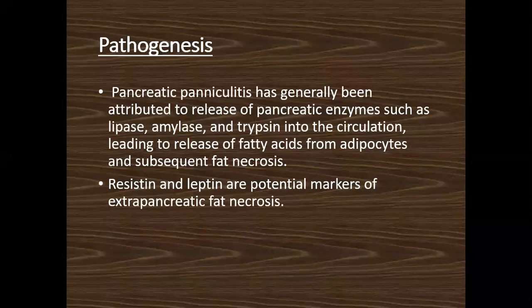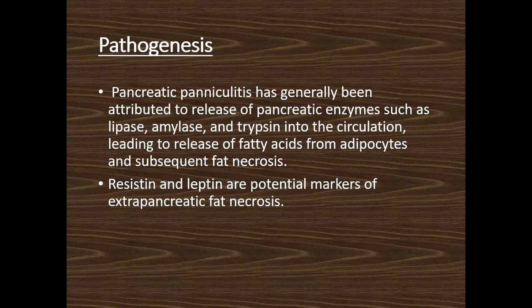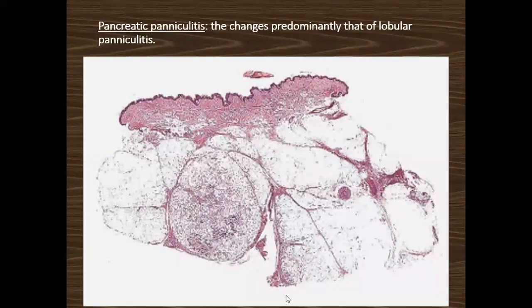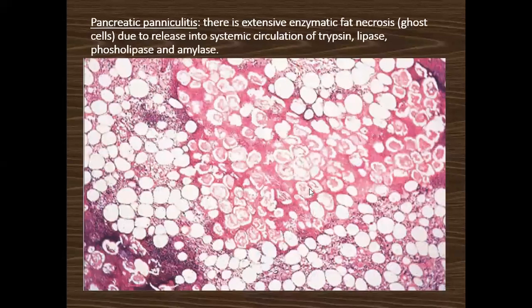Pancreatic paniculitis has been attributed to the release of pancreatic enzymes like lipases, amylases, and trypsin into the circulation, leading to release of fatty acids from adipose tissue and subsequent fat necrosis. Resistin and leptin are potential markers of extra-pancreatic fat necrosis such as in joints. The typical histopathology shows fat necrosis and dense infiltrate; fat cells turn into ghost cells — the second disease, after pilomatricoma, in which the term ghost cells is used.